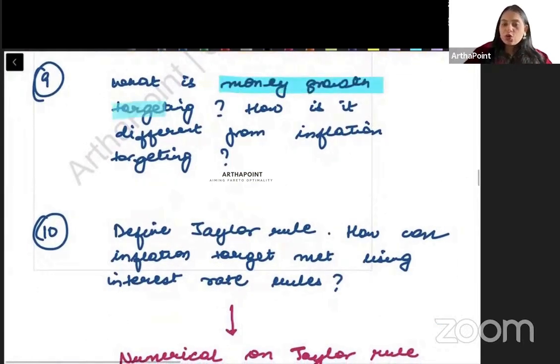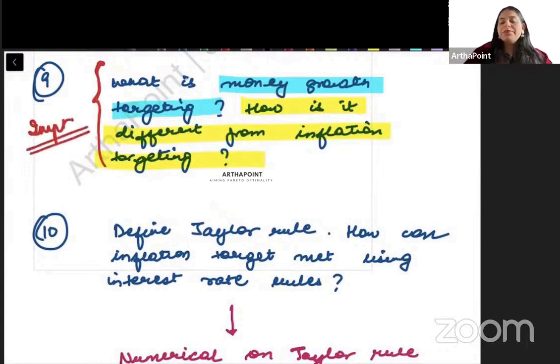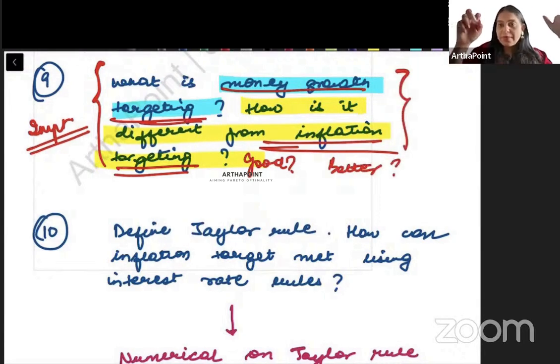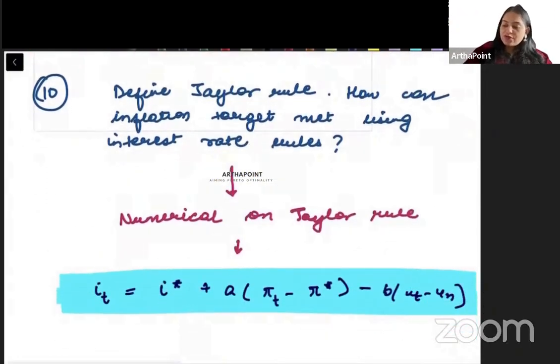Next question. What is money growth targeting and how is it different from inflation targeting? Again this is an important question from exam point of view. Why beta? Because in exam usually wo aap ko doh targets ko compare karne ko bhi de de te hain. They will go ahead and say contrast between inflation targeting and money growth targeting. Which is more good from the point of view of economy. Which is better which should the government use. Toh in cheezo like this you know they will ask you to compare or analyze which is the better one. Toh is cheez pe there can be a question and you need to do these well.